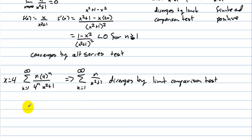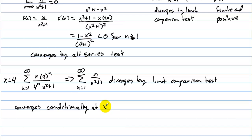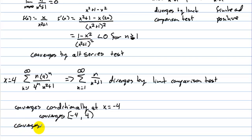So for the original series, it converges conditionally at x equals negative 4 and diverges at x equals positive 4. Therefore, the interval of convergence is negative 4 to 4, with the left endpoint included, and it converges absolutely on the open interval negative 4 to 4.